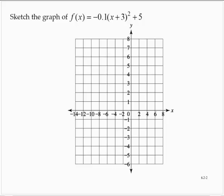Sketch the graph of f(x) = -0.1(x+3)² + 5. So like the previous example, does it open up or down?